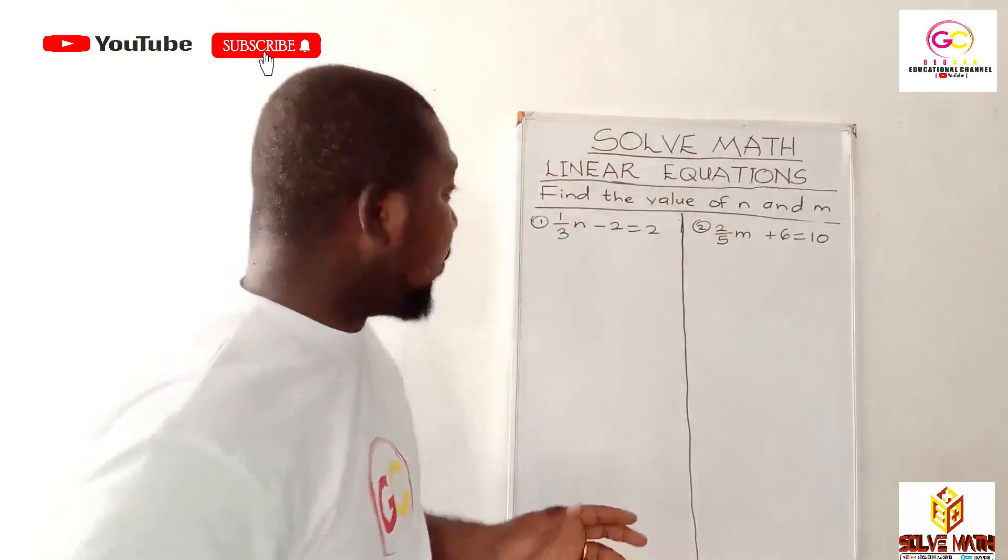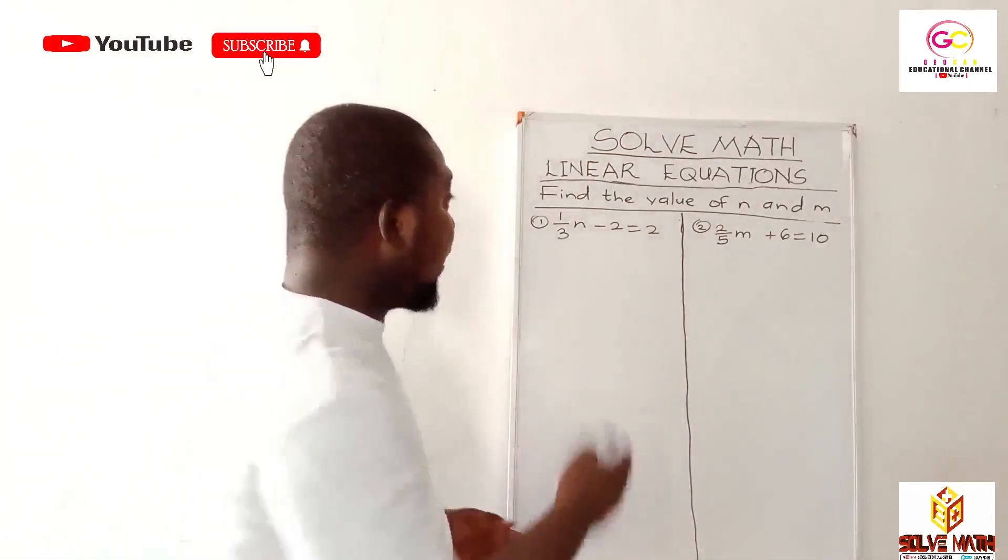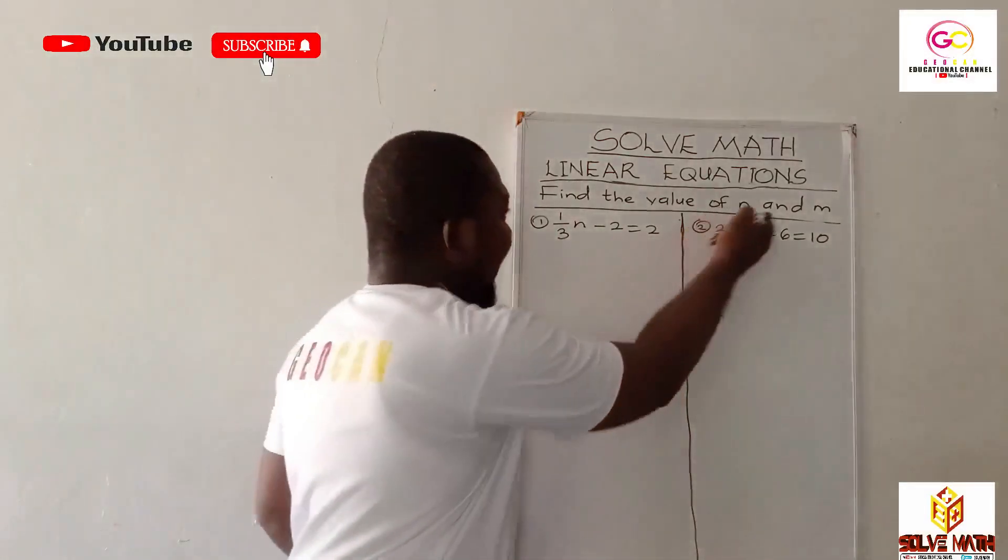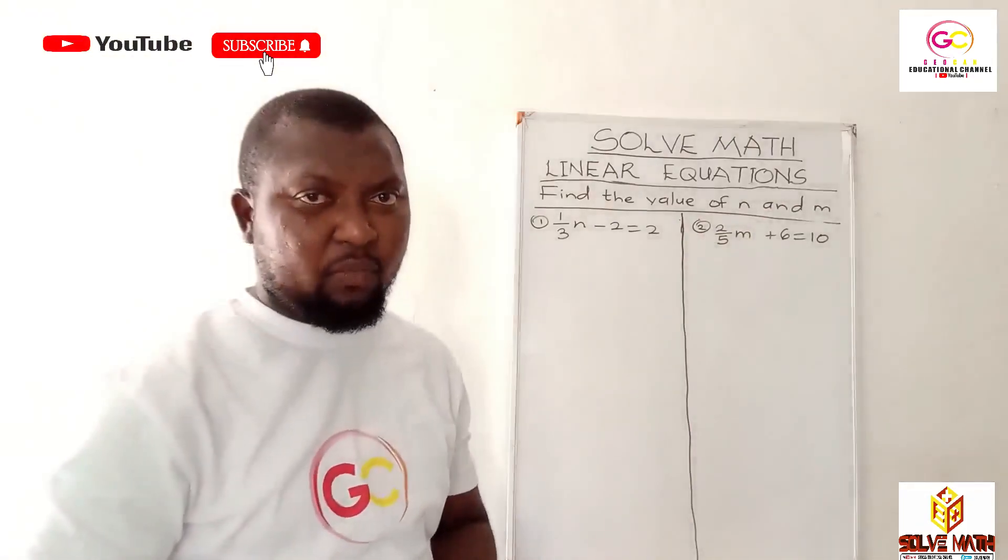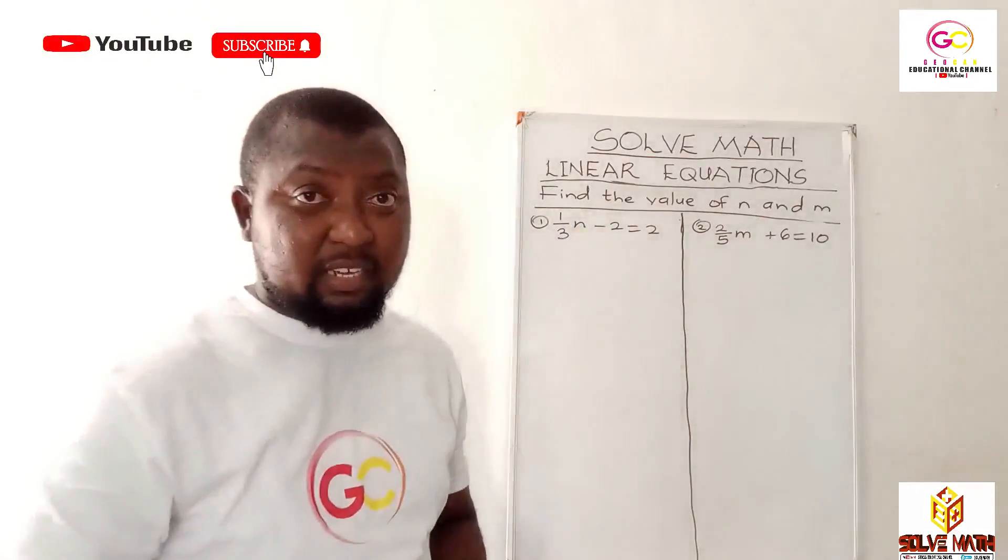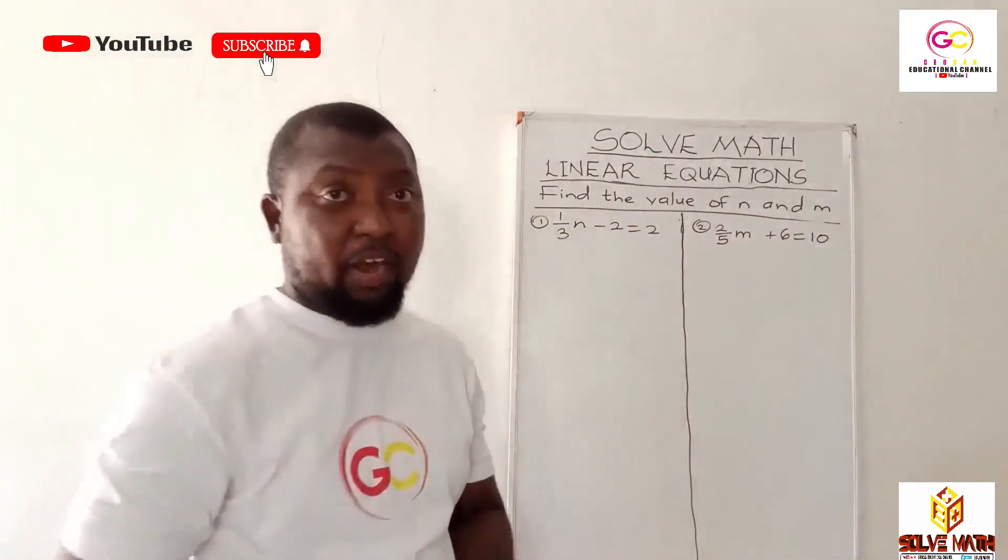Let's move to the board and tackle this particular question. The instruction is to find the value of m and n. You should know that m and n are just values but we don't know them, so they've been represented with variables.